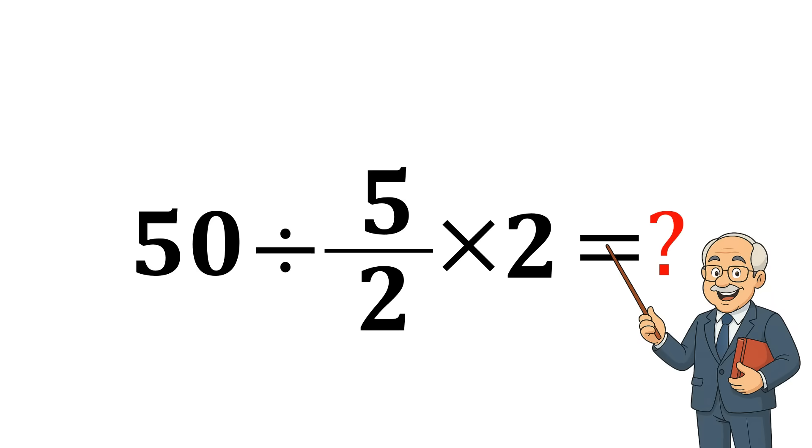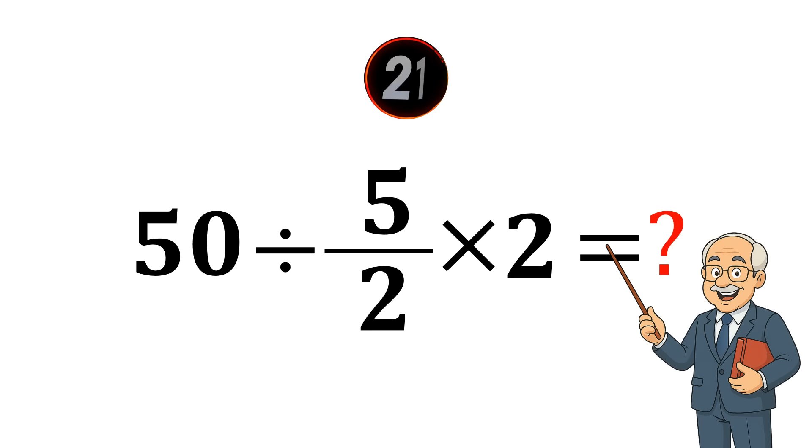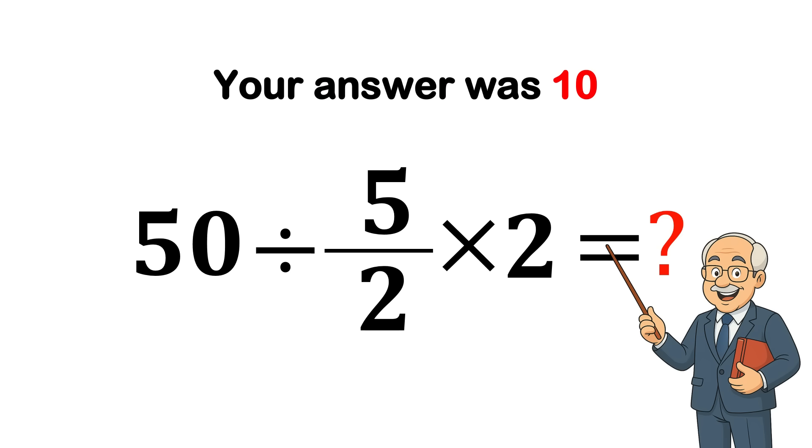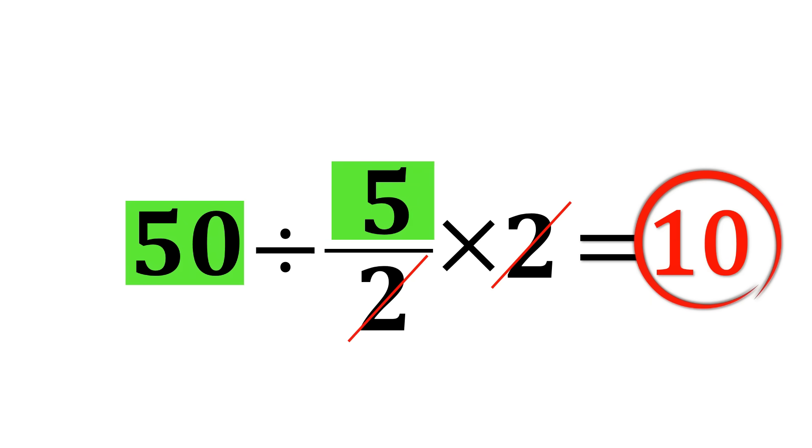Look closely at this math problem. You have just three seconds to solve it. Ready? Three, two, one. Your answer was 10, wasn't it? I know how you solved it. You thought this 2 would cancel out that 2, leaving you with 50 divided by 5, which is how you got 10.